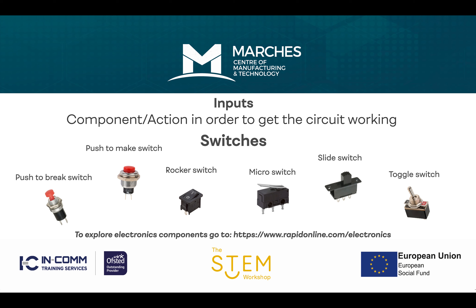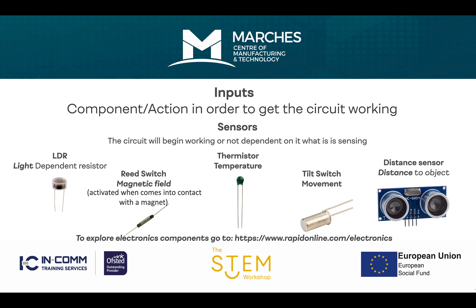Lots of examples of inputs can be found on the Rapid Online site, which is a great resource for exploring different component designs once you've understood the name of the component. The next range of inputs are known as sensors — the circuit will only work once it has sensed what it's been designed to sense. The first sensor is the light dependent resistor, which senses light. For instance, street lights come on automatically when it's dark because they have light sensors embedded in their electronic system.